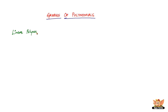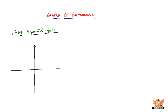Let us start off with the linear polynomial graph and check out the shape it gives us. We have the y-axis and the x-axis, with the origin O, and axes labeled x, x-dash, y, y-dash. The shape we get for a linear polynomial graph is just a straight line — that's why it's called a linear polynomial graph. This line is a solution of a linear polynomial, represented as y equals ax plus b.